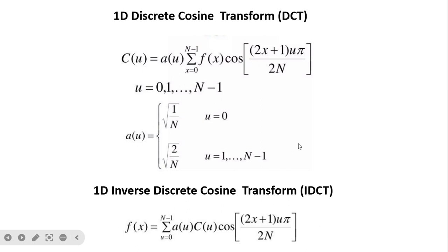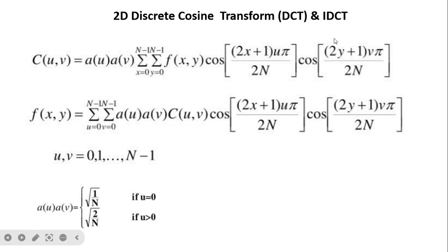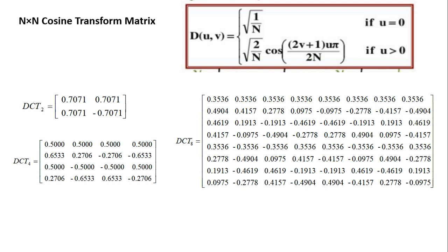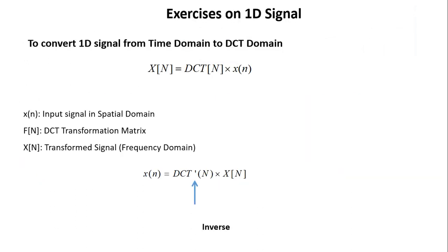For two-dimensional signals like images, the DCT uses both u, v (frequency) and x, y (spatial) indices. In practice, DCT is applied on blocks of size 2×2, 4×4, 8×8, or 16×16. A cosine matrix is precomputed and applied to the input image block. The matrices for 2×2, 4×4, and 8×8 are fixed values used to convert from spatial domain to frequency domain.